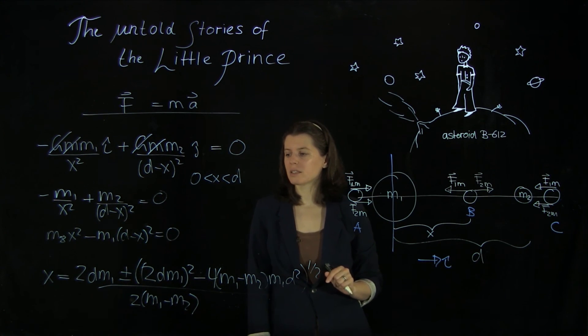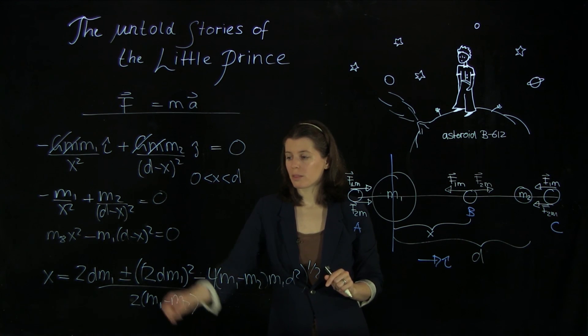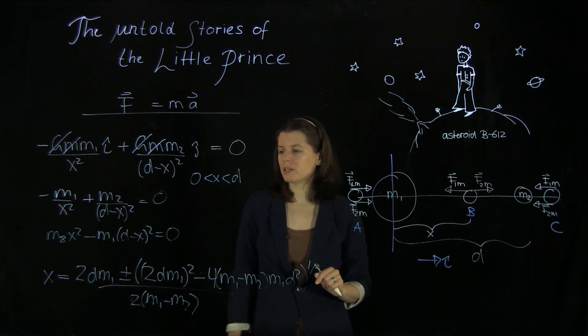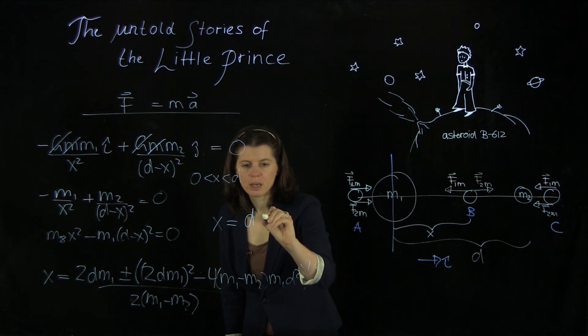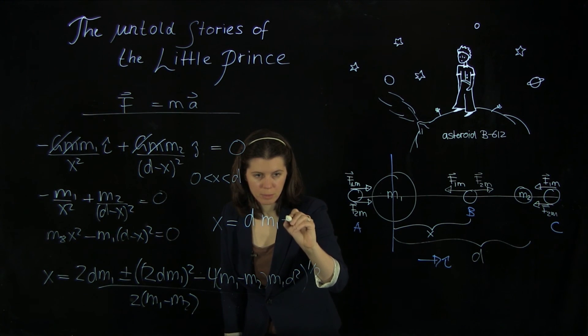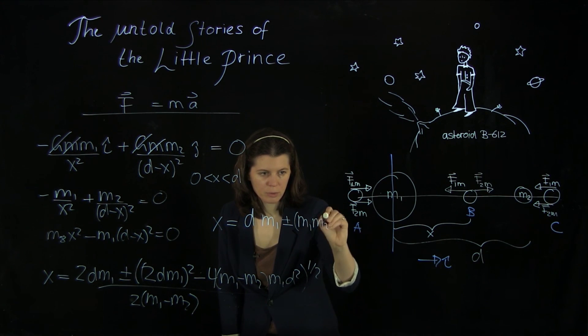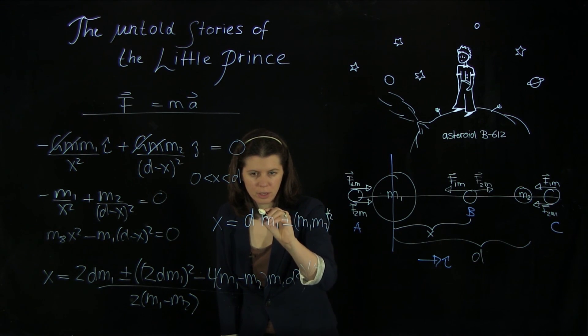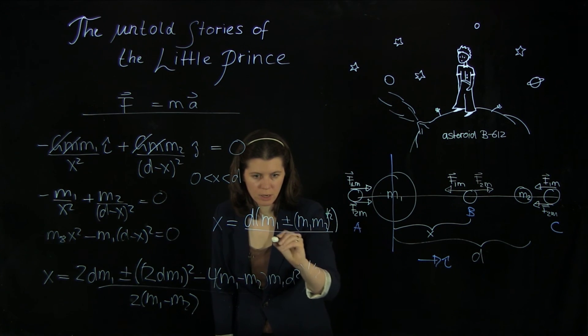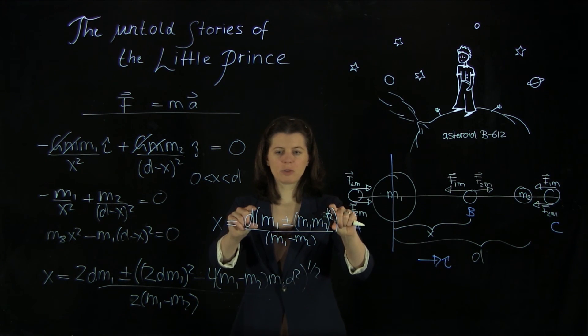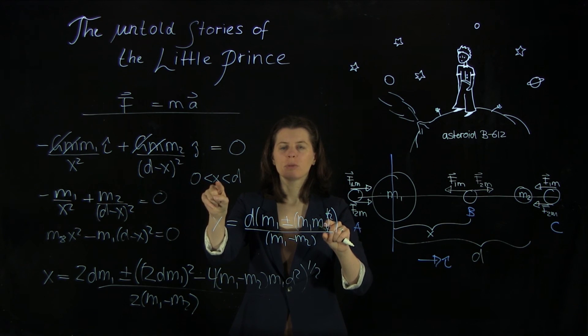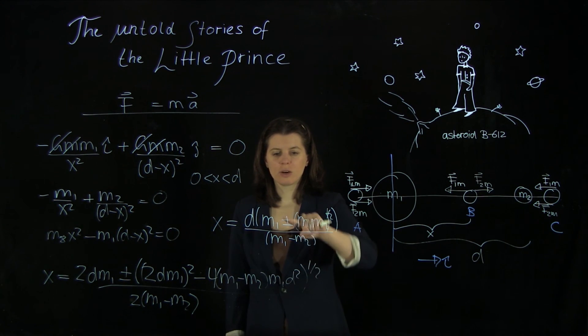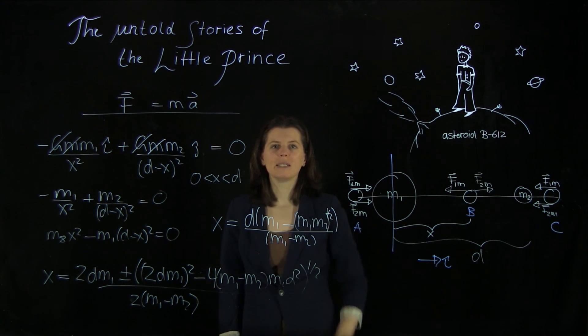So this simplifies to x equals d m1 plus minus square root of m1 m2 over m1 minus m2. And we need to get this term here smaller than one, or to be smaller than one, if the x is between zero and d. And as it turns out, that is indeed true if we use the minus sign here.